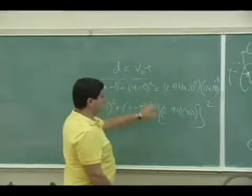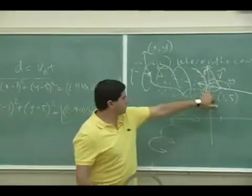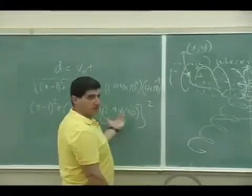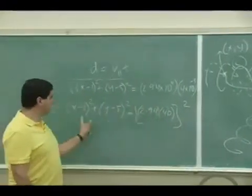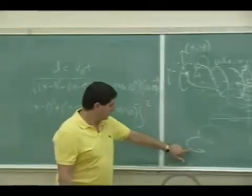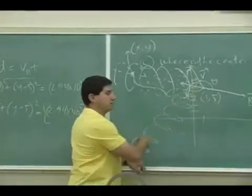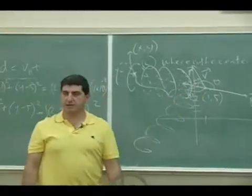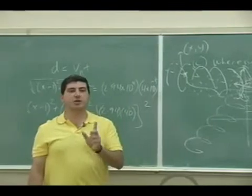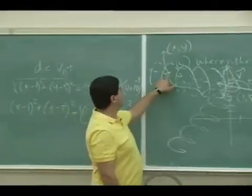And the distance traveled from here to here can still be this. In other words, this equation that I have here can be true for any X and Y such that its distance from here to here is equal to V parallel times T.